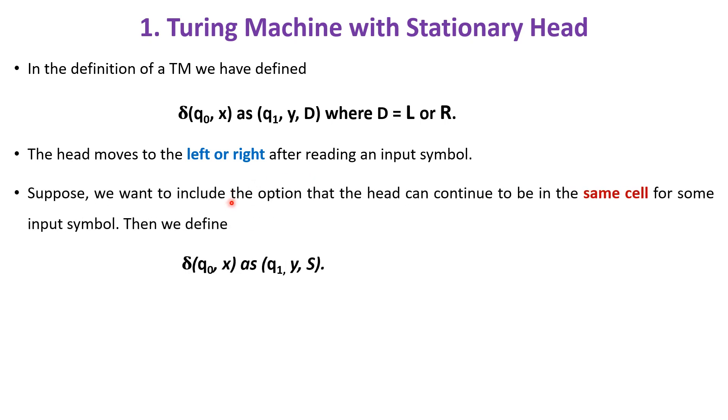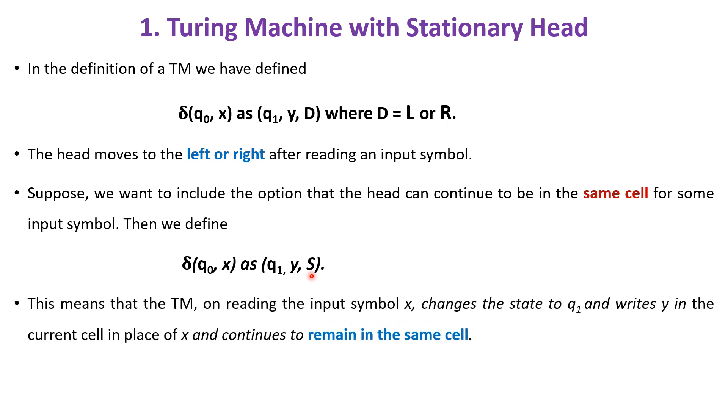Now, suppose we want to include the option that head can continue to be in the same cell for some input symbol. Then at that time, we can represent D as S. That is, on reading input x, the Turing machine changes the state from q0 to q1, replaces x by y in the current cell and continues to remain in the same cell.